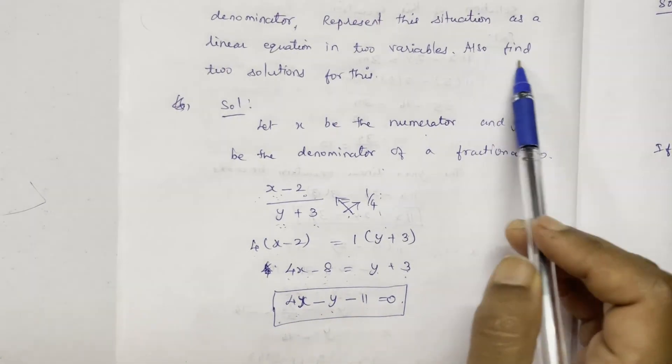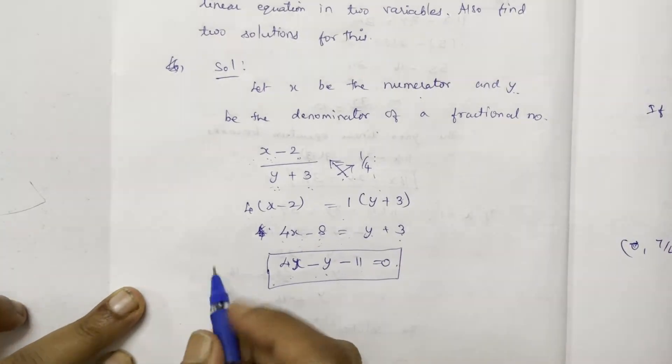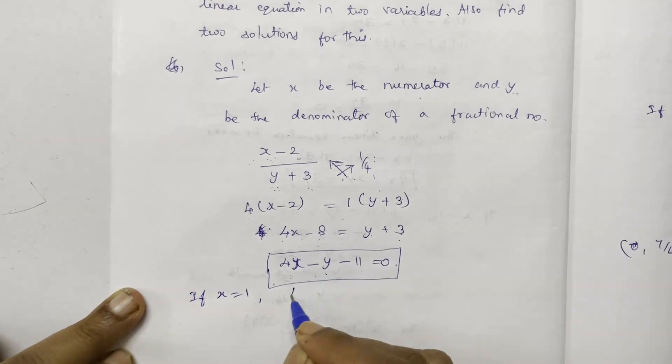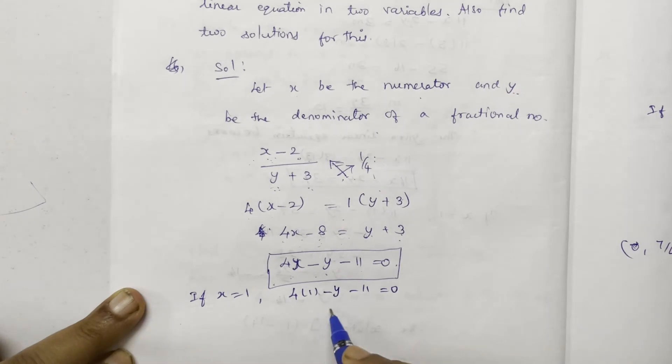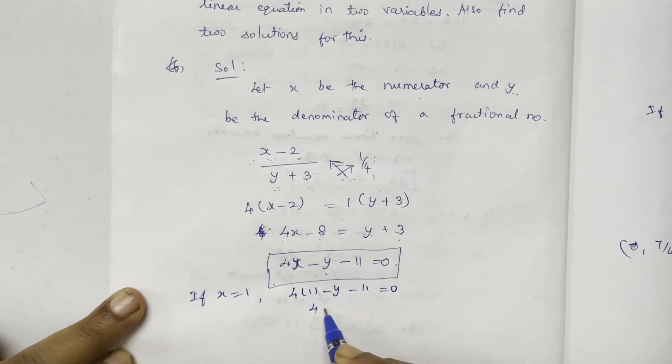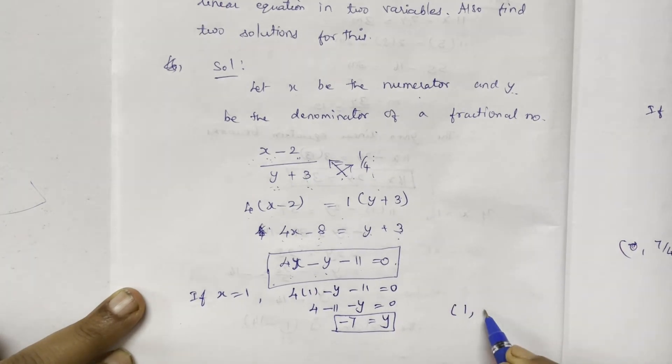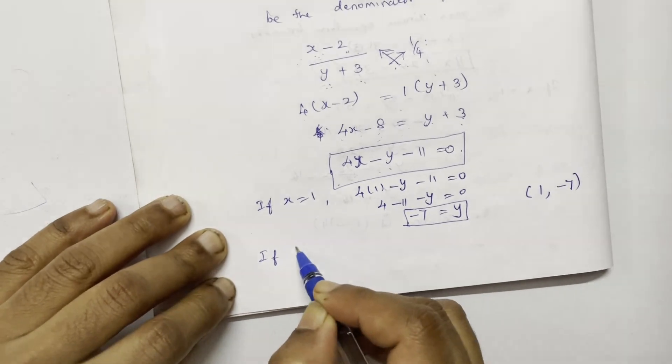So that form is 2 solutions for this equation. If solutions calculate, if x equal to 1, this is one more solution. So x is equal to... If x is equal to 0.